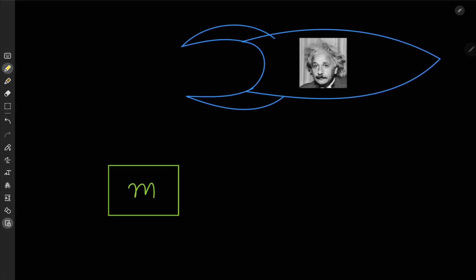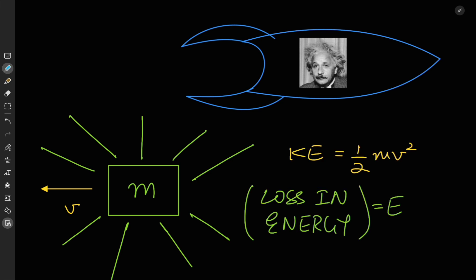Now from the rest frame of Einstein, it's the box that moves away from him with velocity v, and he records its kinetic energy to be one-half of mv squared. Now when the box emits a burst of radiation, Einstein will also record a decrease in the total energy of the box equal to the energy of the radiation emitted.